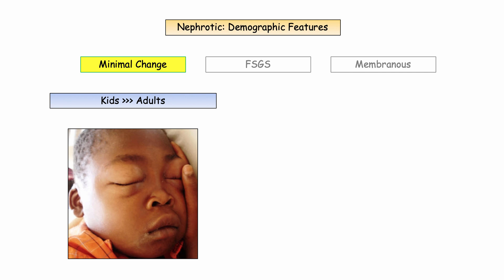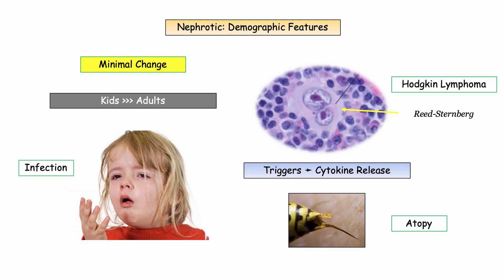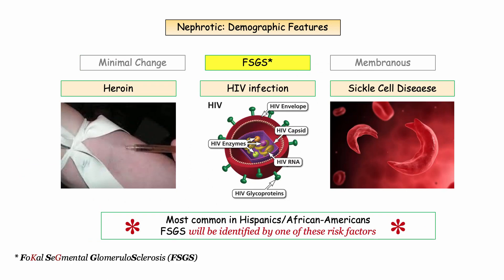Let's begin exploring the key demographic features starting with minimal change disease. The first thing to note is this is predominantly a disease of children. Although adults may present with minimal change, if they present as an adult, you should consider other etiologies on Step 1. The next key point to anticipate in the question stem is the presence of a triggering event. The common theme to all triggers is cytokine release. Common scenarios include acute infection, atopic disorders such as an insect sting, and the presence of a neoplasm — with Hodgkin lymphoma at the top of the list, as the Reed-Sternberg cell produces a variety of chemokines.